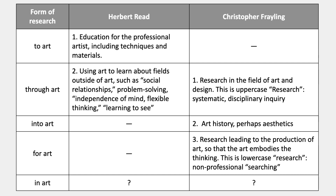Next up, research through art. Frayling's definition is research through art means research in the field of art and design — he calls this uppercase Research, systematic disciplinary inquiry. This includes design research, and anything else that is systematic in that way. The third row, research into art, Frayling says would be like art history — you're researching into art if you're reading about a certain artist or a practice; he also includes aesthetics. That leaves the interesting one: research for art.